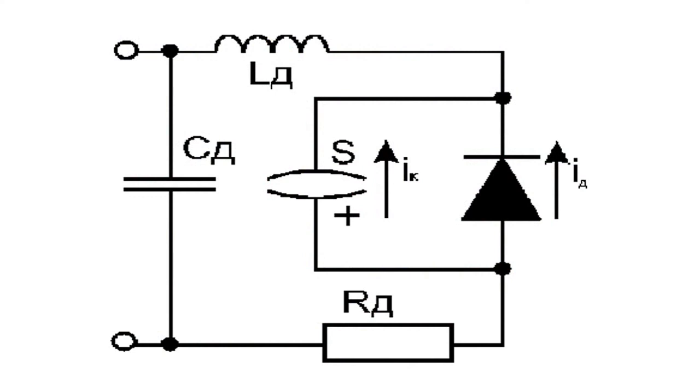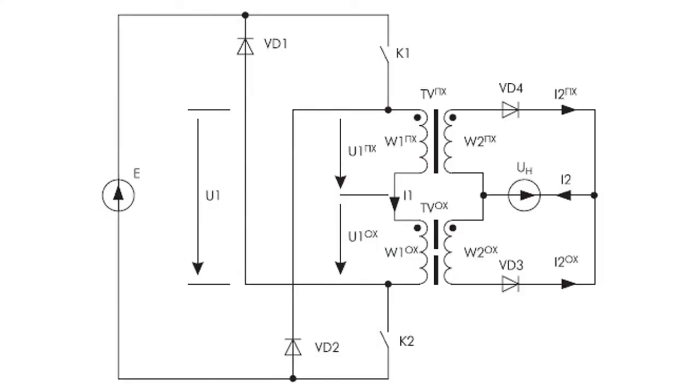An equivalent circuit is an electric circuit where all electronic elements are substituted by closely functioning circuits consisting of perfect elements. It is one of the basic tasks of radio electronics to calculate and design electric circuits, and specifically to get detailed quantitative information on the processes occurring in the circuit.